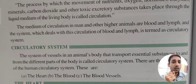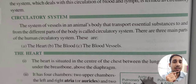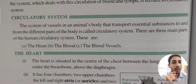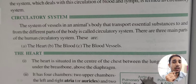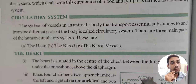The system of vessels in an animal's body that transport essential substances to and from different parts of the body is called the circulatory system. Different vessels in the animal's body send different types of substances to different parts, whether blood is moving from the heart to the lungs, kidneys, or other cells.